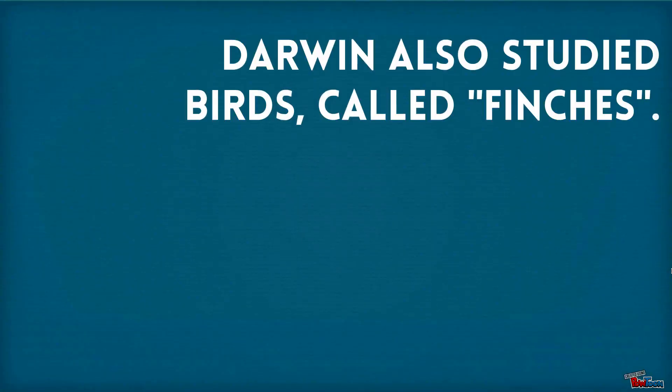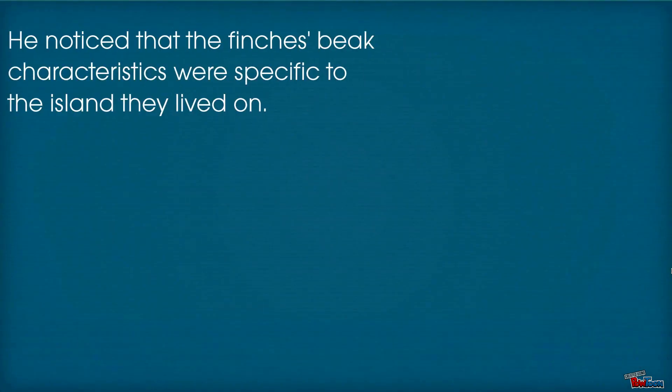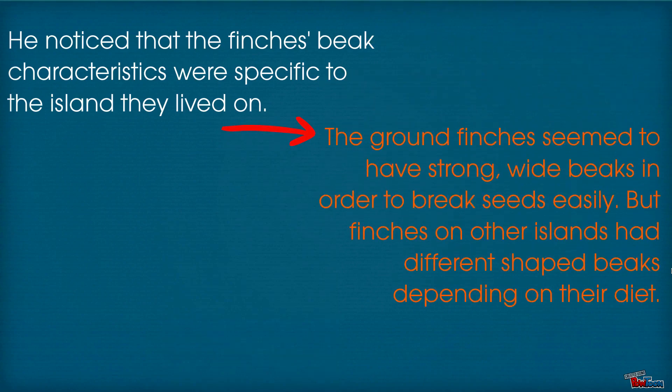Darwin also studied birds called finches. He noticed that the finches' beak characteristics were specific to the island that they lived in. The ground finches seemed to have strong, wide beaks in order to break seeds easily, but finches on other islands had different shaped beaks depending on their diet.